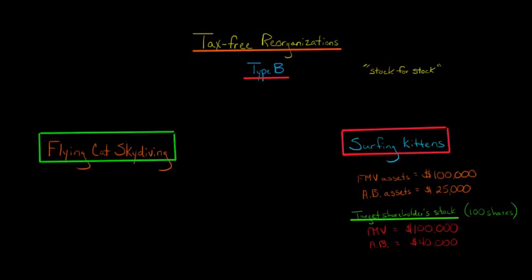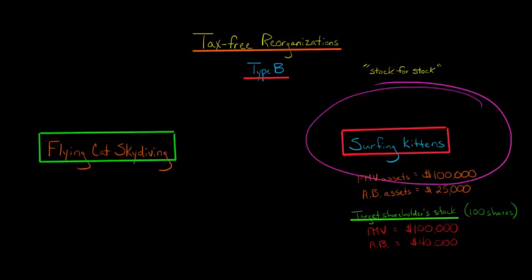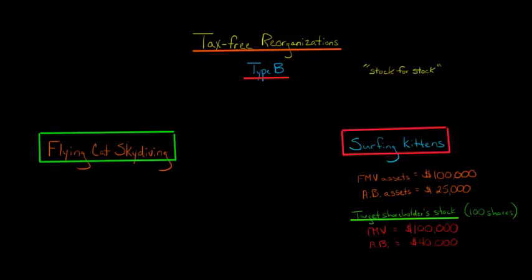Let's say you're the director of Flying Cat Skydiving — you teach cats how to skydive — and you want to acquire Surfing Kittens, a company that teaches kittens how to surf in the ocean. You want to acquire Surfing Kittens but you don't want to pay any tax.